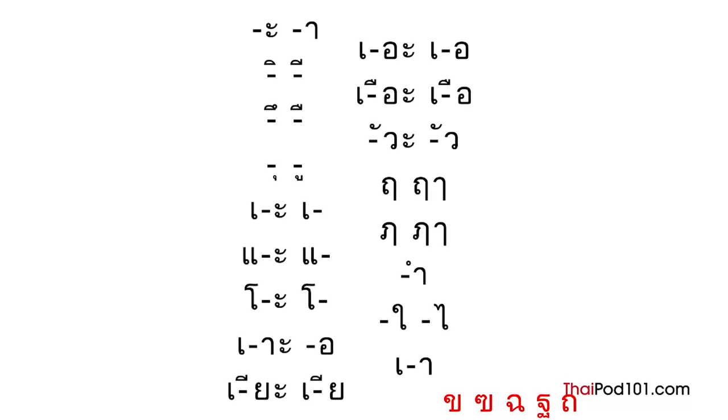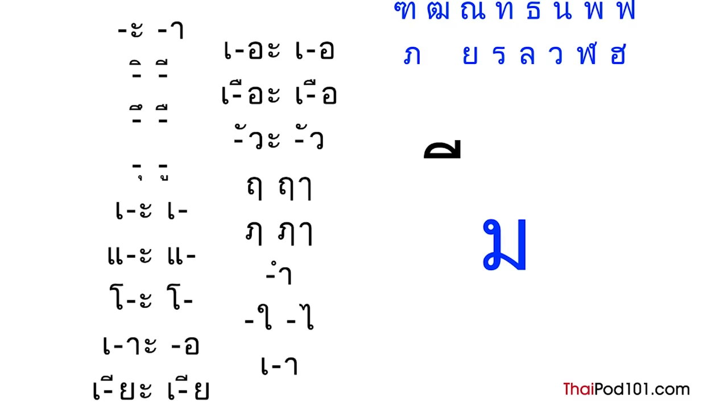The Thai vowels have to be written and attached to a consonant. They can appear above, below, in front, behind, or all around the consonant. Thai has five different tones. Tone means how high or low the pitch of a sound is. The five tones are mid, low, falling, high, and rising.